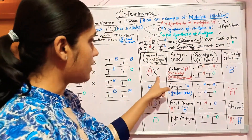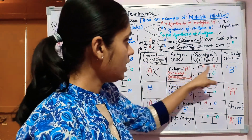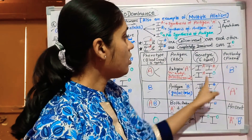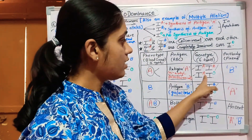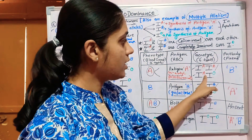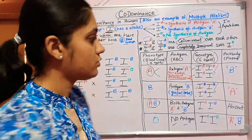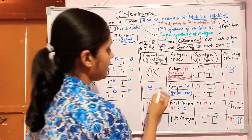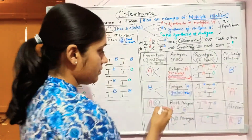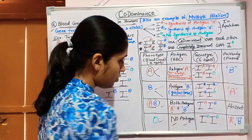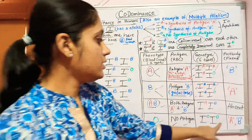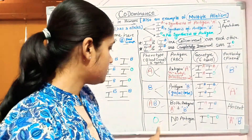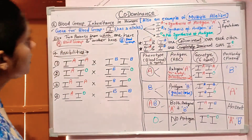There are six types of genotypes for blood groups. Blood group A can have two genotypes: homozygous I^A I^A or heterozygous I^A I^O. Blood group B can similarly have I^B I^B or I^B I^O. Blood group AB has genotype I^A I^B, and blood group O can only form when both alleles are I^O I^O.